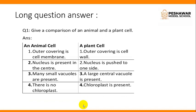Now give the heading of long question answer. Question number 1: Give a comparison of an animal cell and a plant cell. Answer: On one side you will write animal cell and on the other side you will write plant cell. Point number 1: In animal cell, the outer covering is cell membrane, and in plant cell, the outer covering is cell wall.